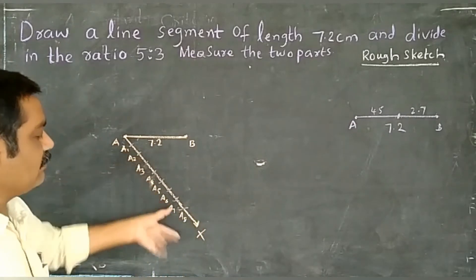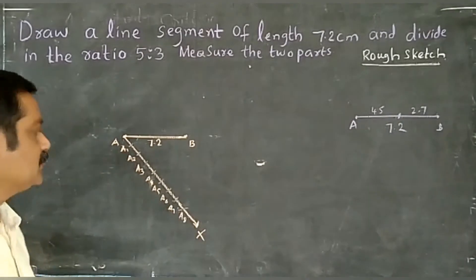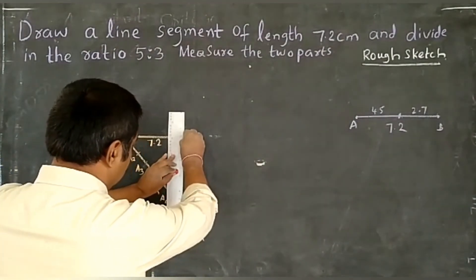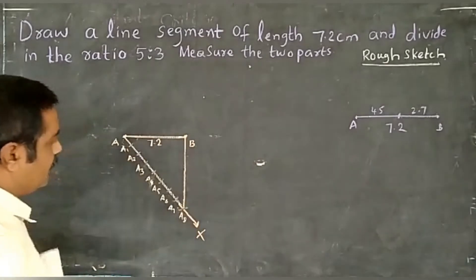A4, A5, A6, A7, A8 on AX which are equal intervals. Next, join A8B.